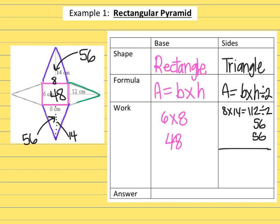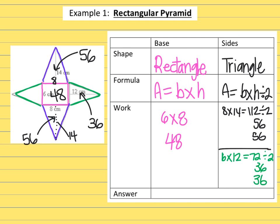The last two sides are on the left and the right. The dotted line going through the center is 12, representing the height of this triangle, and the base of this triangle matches up on the side, which is 6. So these two triangles are 12 by 6. Six times 12 is 72; 72 divided by 2 is 36. There are two of them, so I write it down twice. Each of those pieces is 36.